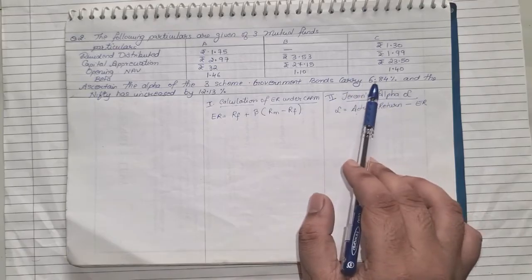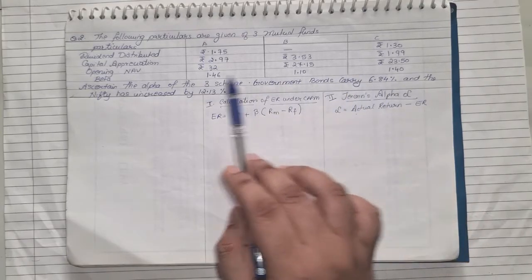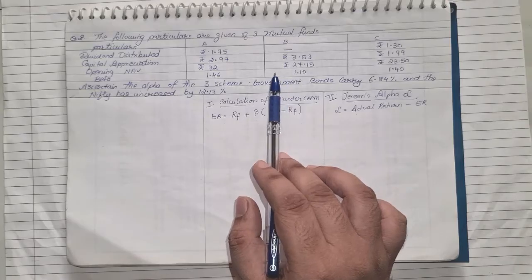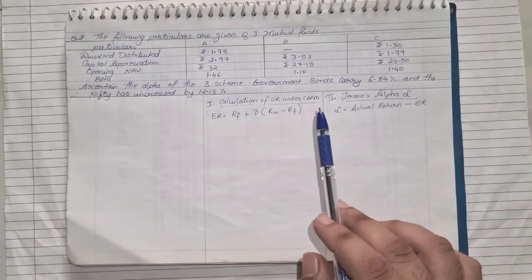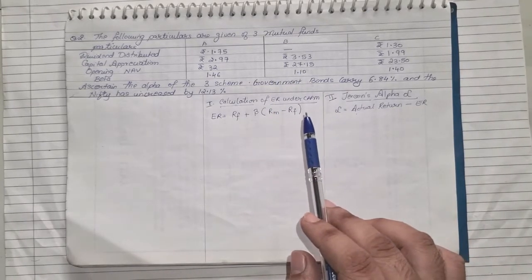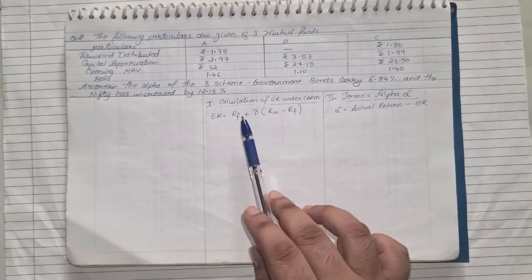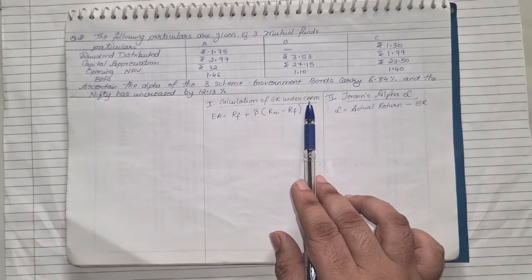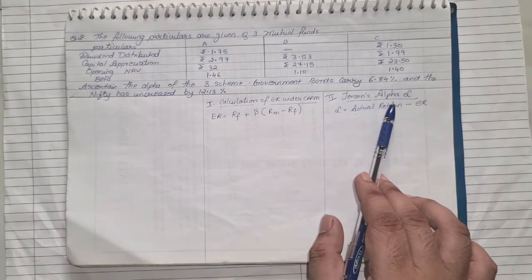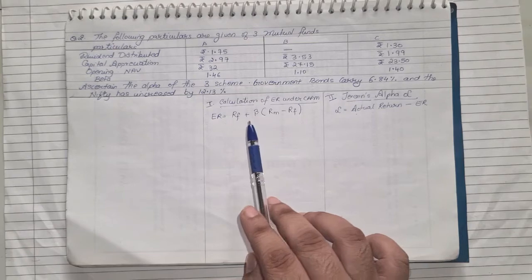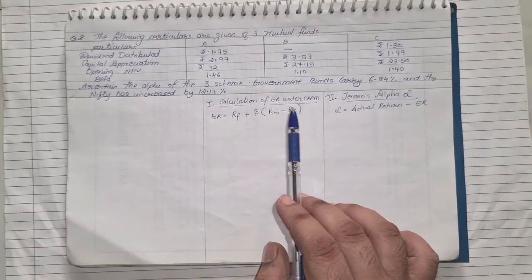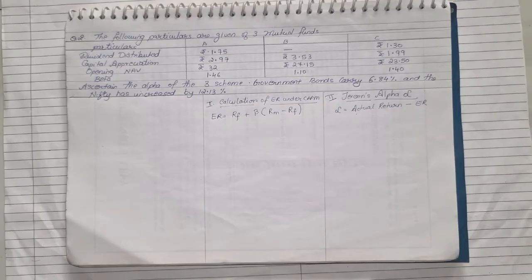Market return has been given, risk-free return has been given, the beta has been given, and they are asking us to find the alpha. Alpha has two parts to solve it. Step number one, you need to calculate the expected return under CAPM, and secondly you need to find the Jensen's alpha. Now we will first start with finding the expected return under CAPM for all the three schemes.